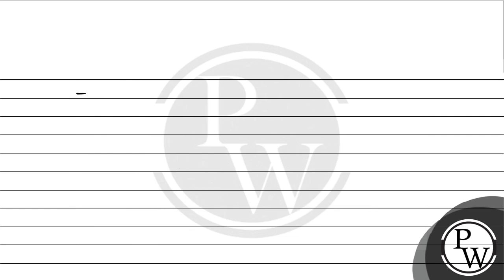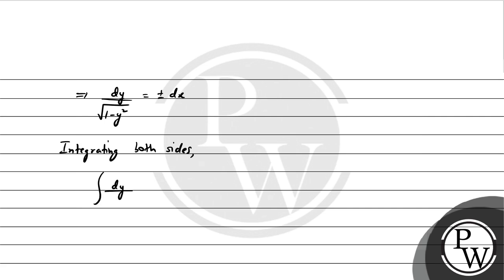So this implies dy को √(1 − y²) के नीचे ले आएंगे, equals ±dx। हम लोग दोनों तरफ integration लगा देंगे। Integration of dy / √(1 − y²) = ±∫dx। यह variable separable form है। Left-hand side integral का formula sine inverse है, so sin⁻¹(y) = ±x + c।